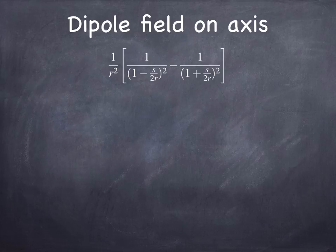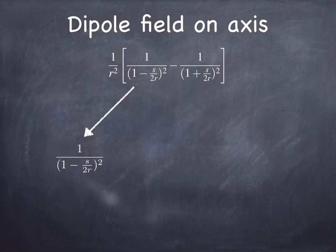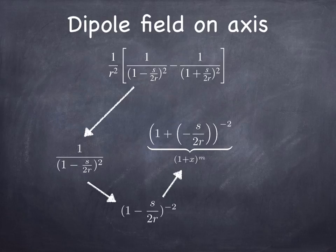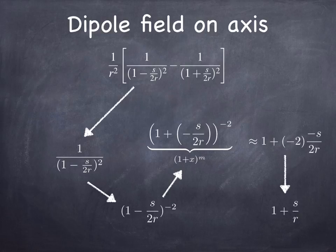In fact, let's do this. Let's rewrite 1 over 1 minus s over 2r squared as 1 minus s over 2r to the negative 2. And then we can think of the minus s over 2r. It's kind of like an x. So we get 1 plus x to the power negative 2. It's 1 plus x to the power m, where m is negative 2. And x is negative s over 2r. And if you work that out, putting in the approximation that 1 plus x to the m is approximately 1 plus m times x, you get the simple result that it's just 1 plus s over r. And similarly, you get the same answer for the other one, which is 1 minus s over r.